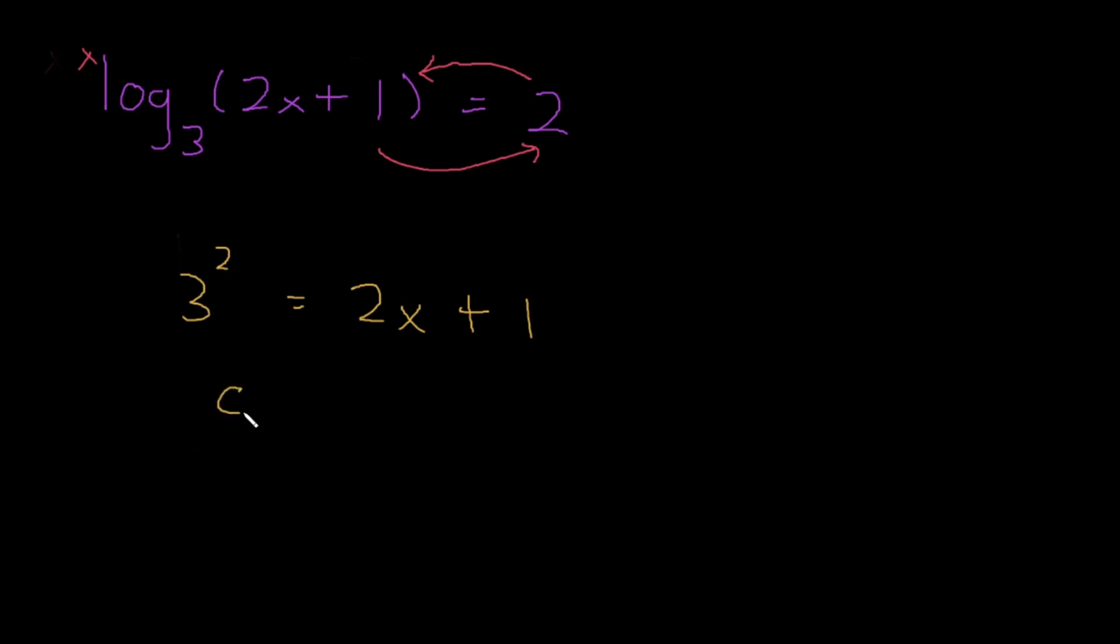Simplifying this, we get 9 is equal to 2x plus 1. You minus 1 on both sides, and you end up with 8 is equal to 2x. Divide 2 on both sides, you get 4 is equal to x. And this is your final answer.